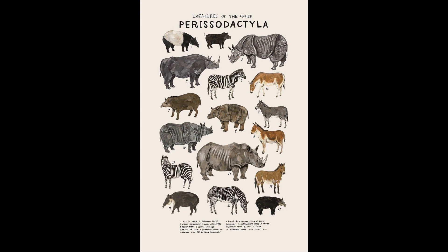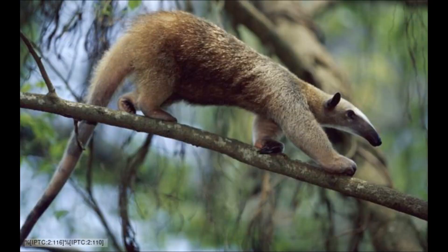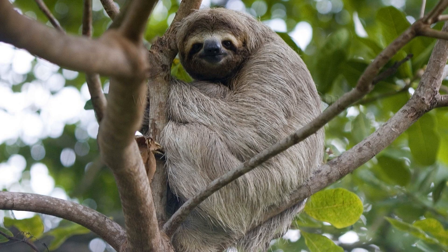Perissodactyla includes tapirs, rhinos, and equines. Tapirs have 14 toes. Rhinos have 12 toes — three on each foot. And equines sport the lowest toe count of any creature, having only one toe on each foot for a total of four toes. That means Perissodactyla has 10 toes on average. Pilosa includes anteaters and two types of sloths: one with 10 toes and one with 12. Anteaters have five on each foot — 20 toes — giving Pilosa a total of 15.5 toes.